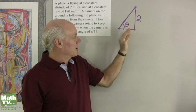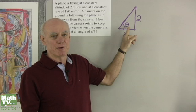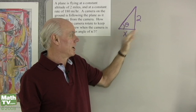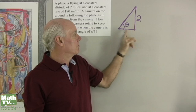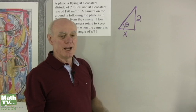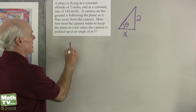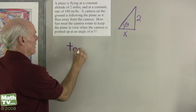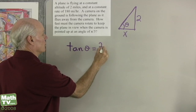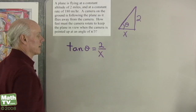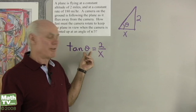I need a relationship between theta, 2, and x. Tangent looks like it's going to work. Tangent of theta is equal to 2 over x. So here's my relationship between x, 2, and theta.